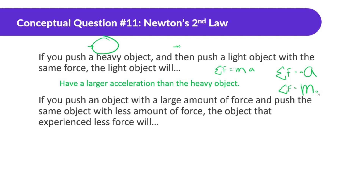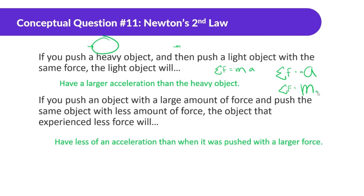If you push an object with a large amount of force and then push the same object with less force, the object experiencing less force will have less acceleration than when it was pushed with the larger force. The smaller the force, the smaller the acceleration; the bigger the force, the bigger the acceleration. The more you push something, the more it's going to change its motion.